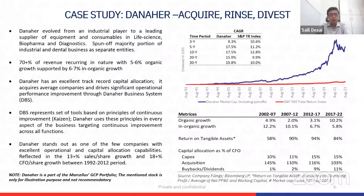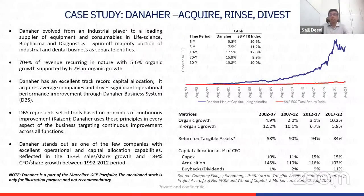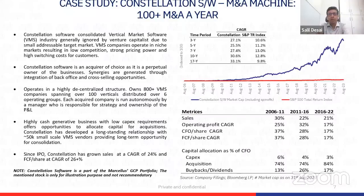18% plus CFO per share growth over a 30-year period — 1990 to 2020 — compounding at 19.8%, which is unbelievable. I'm sure this story is yet to continue for a while. What else? Let's hear more about some exciting names like this.